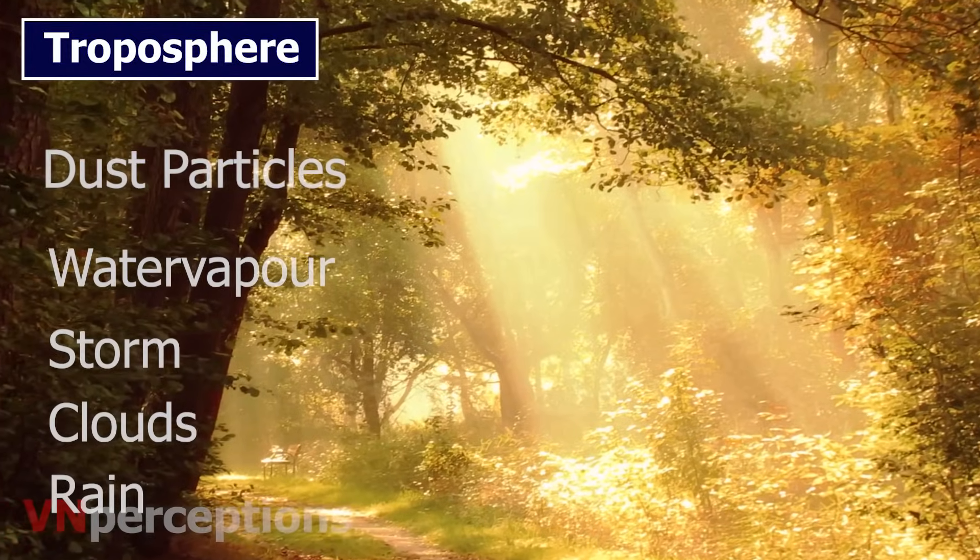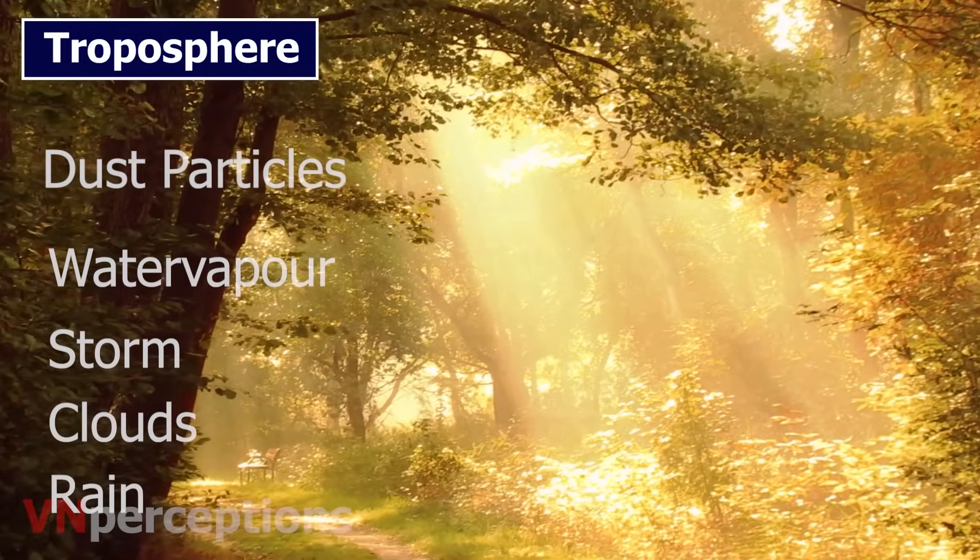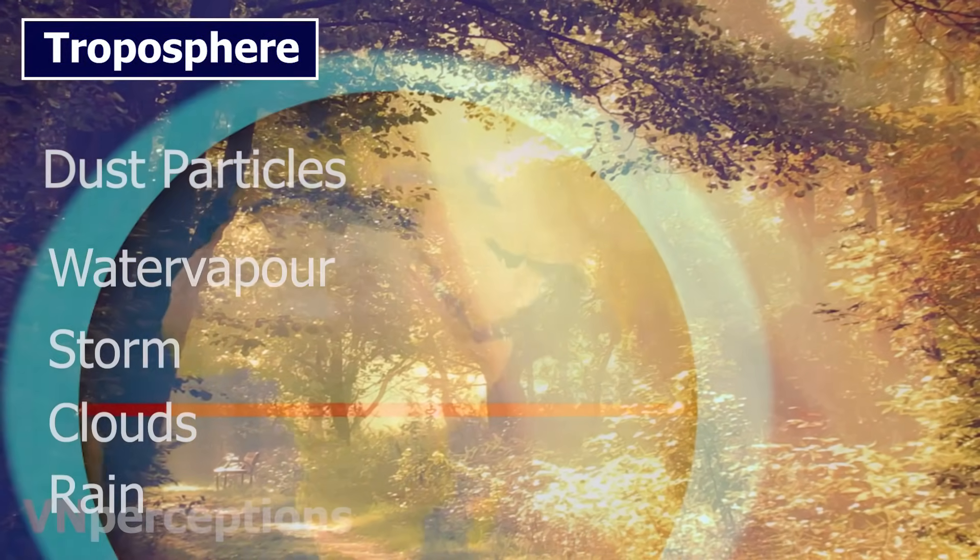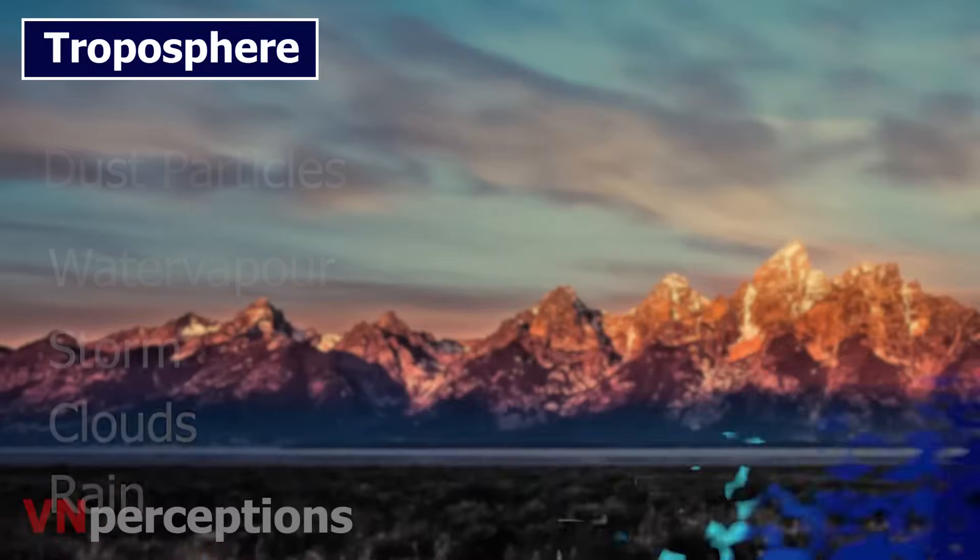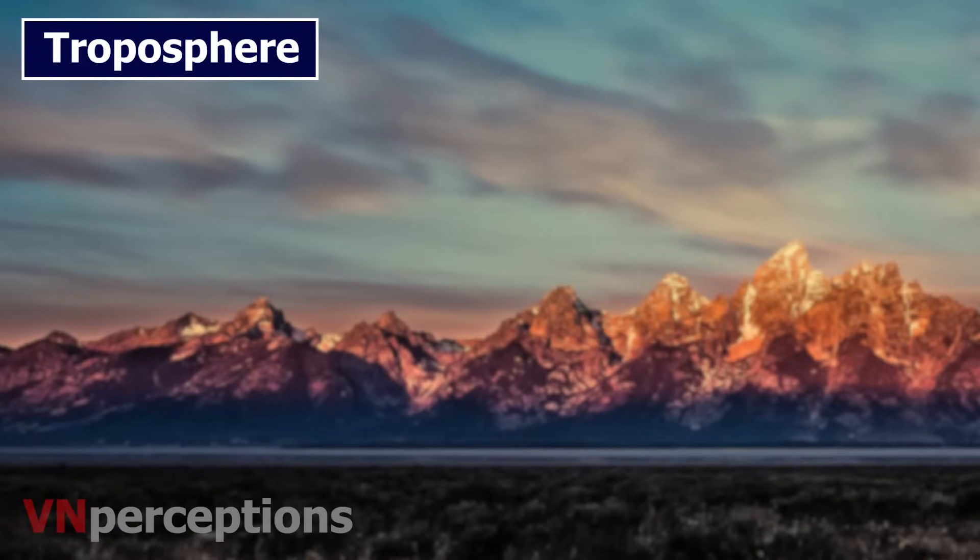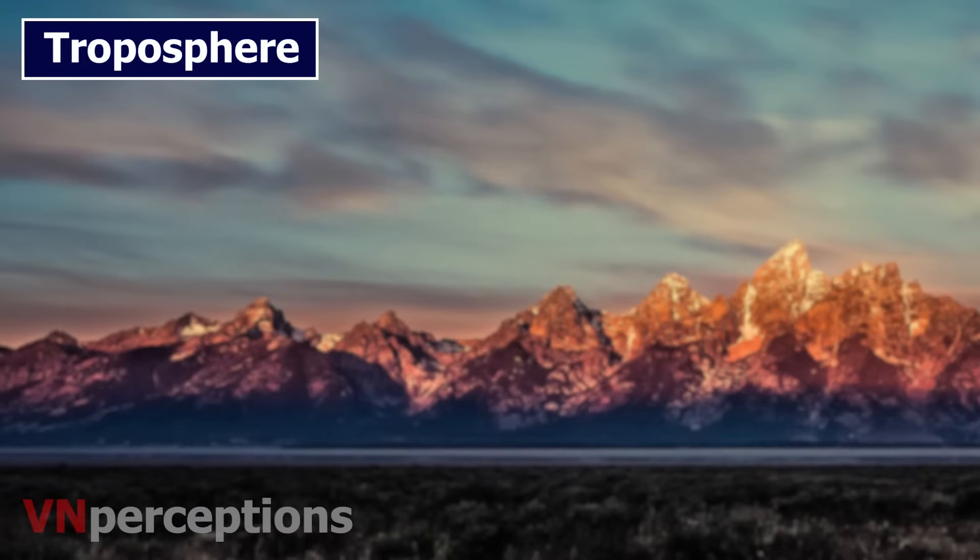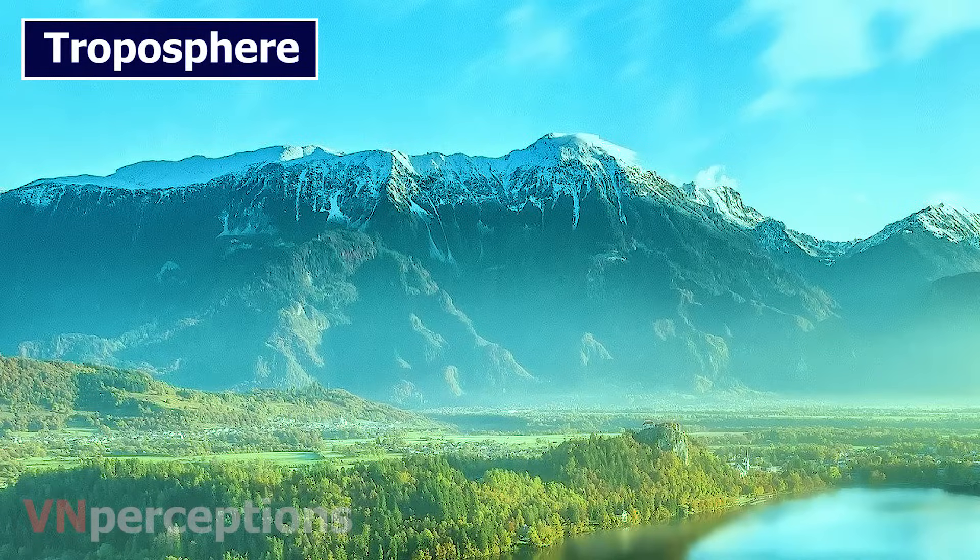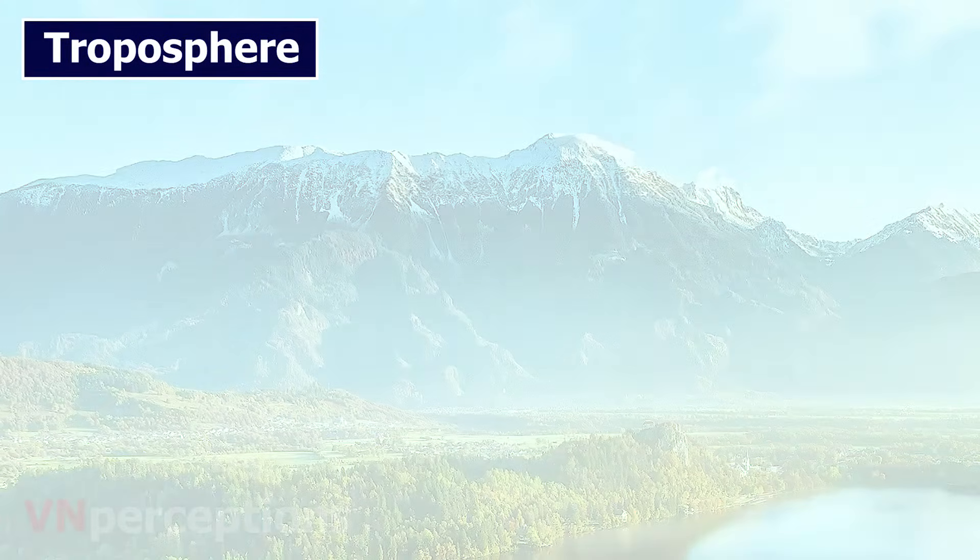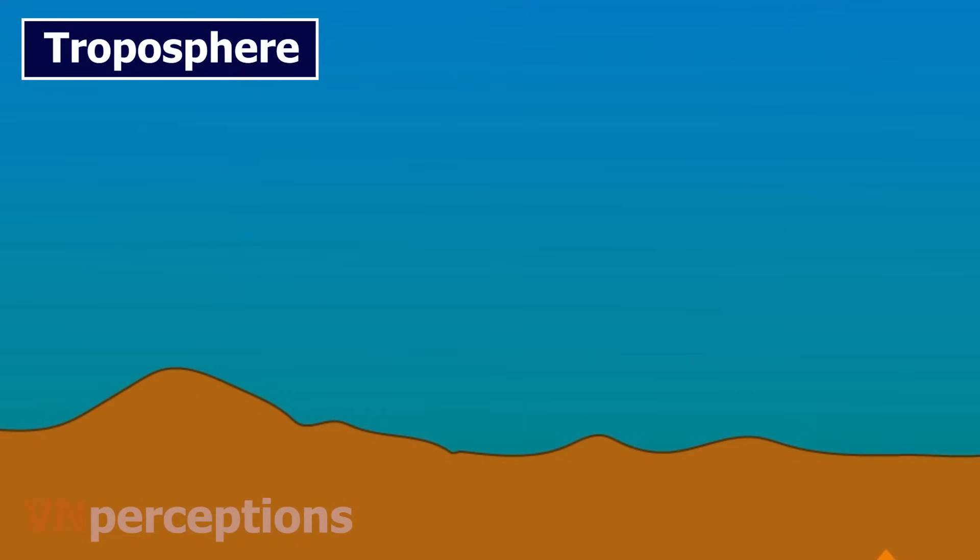All changes in climate and weather take place in this layer. The temperature in this layer decreases at the rate of 1 degree for every 165 meters of height. That is why the peaks of tall mountains can be snow covered even in the summertime. This is the most important layer of all biological activities.